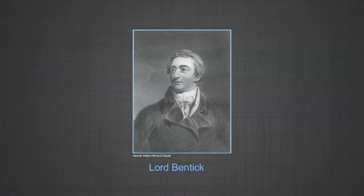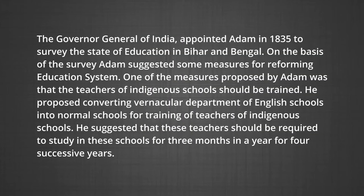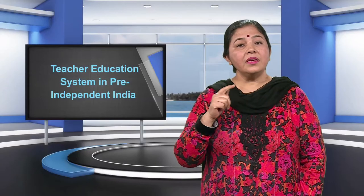The survey found that corporal punishment was observed, students followed a timetable, and the condition of teachers was bad — they were ill-educated and ill-paid. Lord Bentinck, the Governor General of India, appointed Adam in 1835 to survey the state of education in Bihar and Bengal. Based on this survey, Adam suggested measures for improving education. He proposed converting the vernacular department of English schools into normal schools for training teachers of indigenous schools, requiring these teachers to study for three months a year for four successive years.